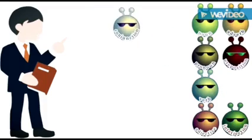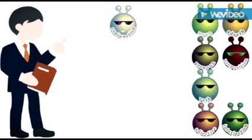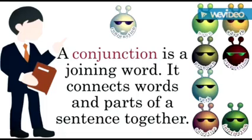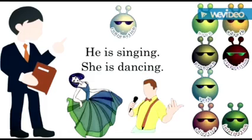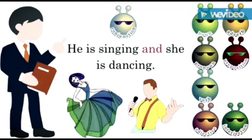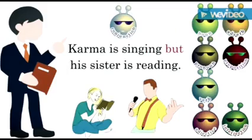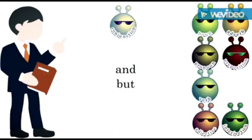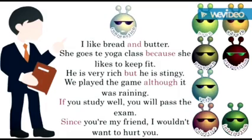Whose turn is it now? Hi, I'm Conjunction! A conjunction is a joining word — it connects words and parts of a sentence together. Look at these two sentences: 'He is singing. She is dancing.' You can join them with a conjunction: 'He is singing and she is dancing.' And and but are two very common conjunctions. Now read these sentences — the conjunctions are highlighted in red — and say what parts they are joining or connecting.